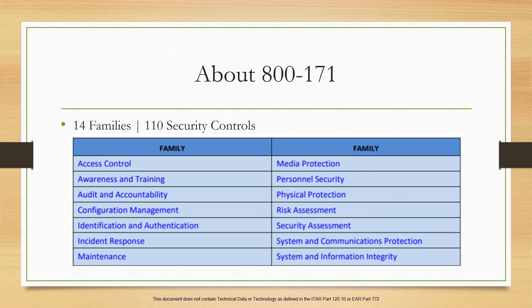The next one is awareness and training. This is all about whether people are properly instructed on how to treat information — are they going through annual training classes, are they being taught about specific security boundaries and data boundaries, and really what they should be doing when handling CUI.